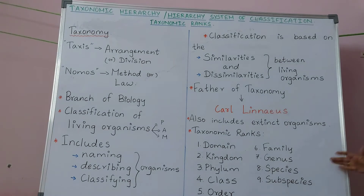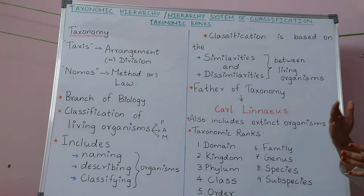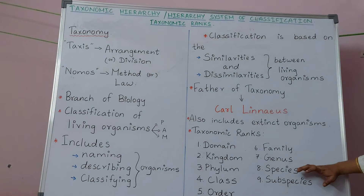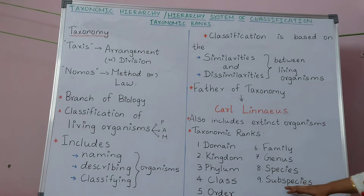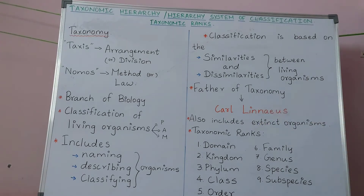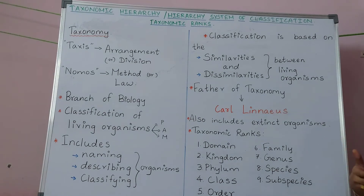Genus is again categorized into species. Species is a more specific group of organisms — the organisms placed inside a particular species have the capacity to reproduce within themselves. Previously species was considered the lowest taxonomic rank, but nowadays we have subspecies. Subspecies includes organisms that are separated from each other due to geographical location.